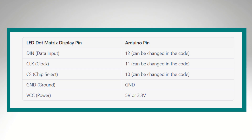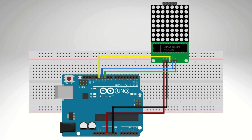Let's see the pin diagram for this circuit. Follow this table to connect the pin with Arduino and the 8x8 LED dot matrix display. See this diagram for reference.